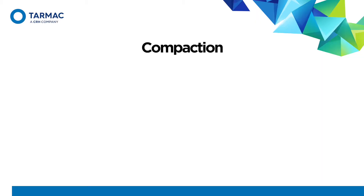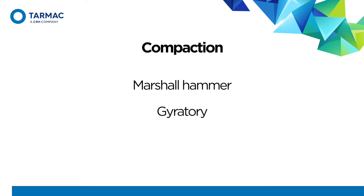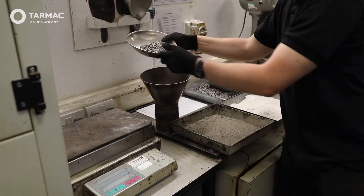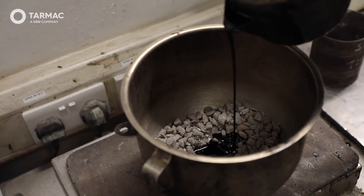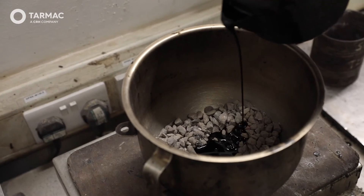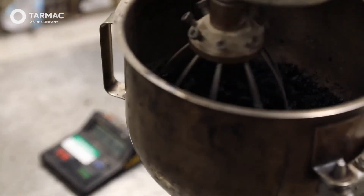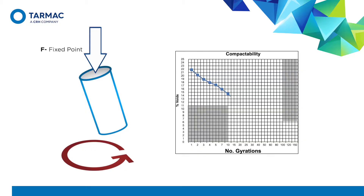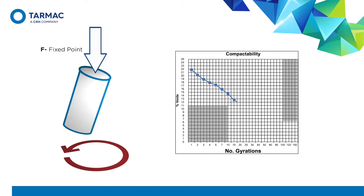The two main laboratory compaction methods are the Marshall hammer, traditionally used for hot rolled asphalt and SMA mix design, and gyratory compaction, generally specific to EME2 mixes. Aggregates are combined in proportions to meet the target grading, preheated, and then mixed with the correct amount of bitumen under lab-controlled conditions. The mixture is then placed into a cylindrical metal mould and compacted to a given number of blows per side or a number of gyrations. The specimens are then allowed to cool, demoulded, and used to determine bulk density.